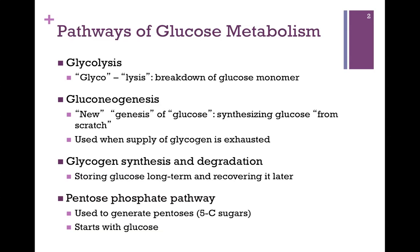Glycogen synthesis and degradation refers to storing it long-term or retrieving it. And lastly, we'll look at the pentose phosphate pathway, where we start with glucose and use that to generate a pentose, a 5-carbon sugar — every cell needs this pathway.